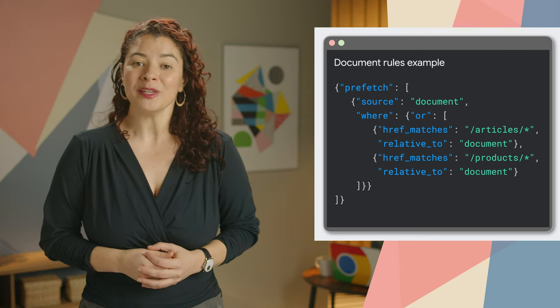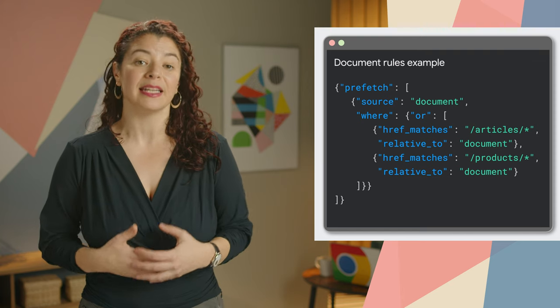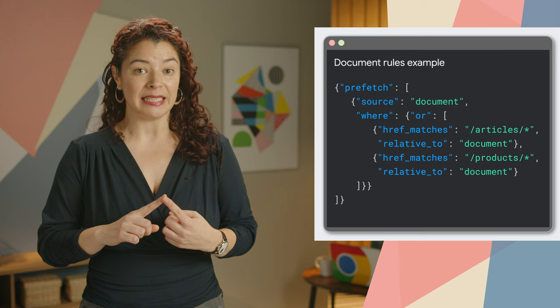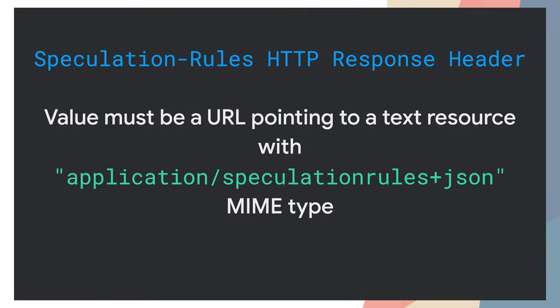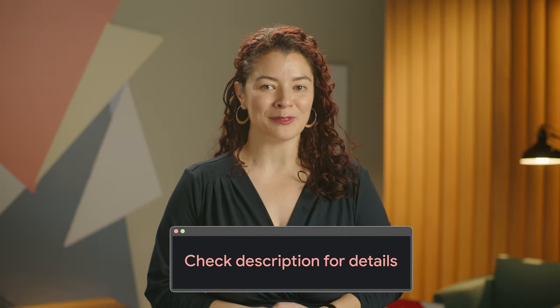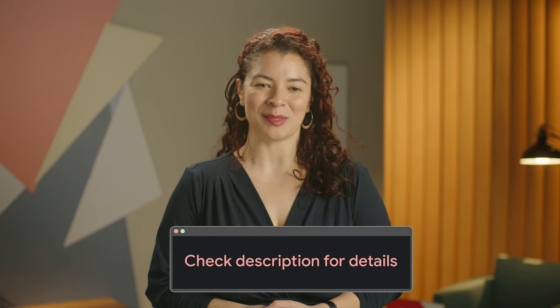This, coupled with a new eagerness field, allows you to automatically pre-fetch or pre-render links on pages immediately, on hover, or on mouse down. A separate change allows specifying Speculation Rules using the Speculation Rules HTTP response header. The header is an alternative to using inline script elements. The link in the description includes more information about the Speculation Rules API and its improvements in Chrome 121.